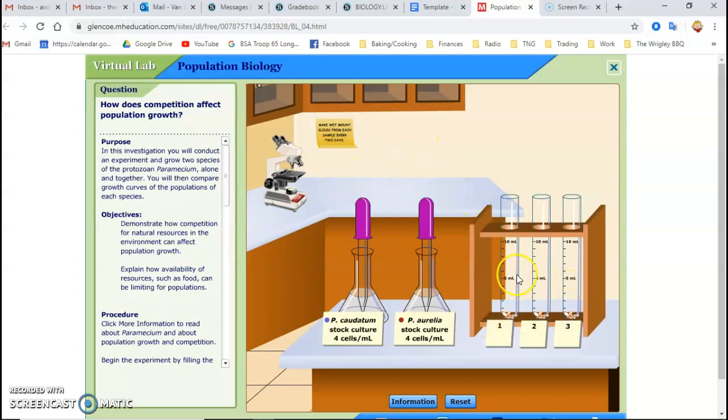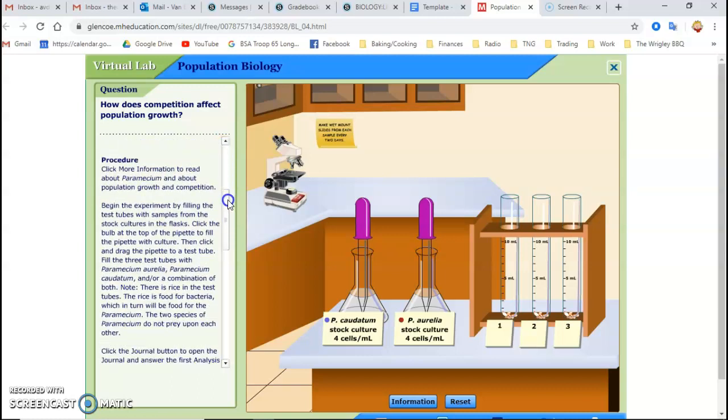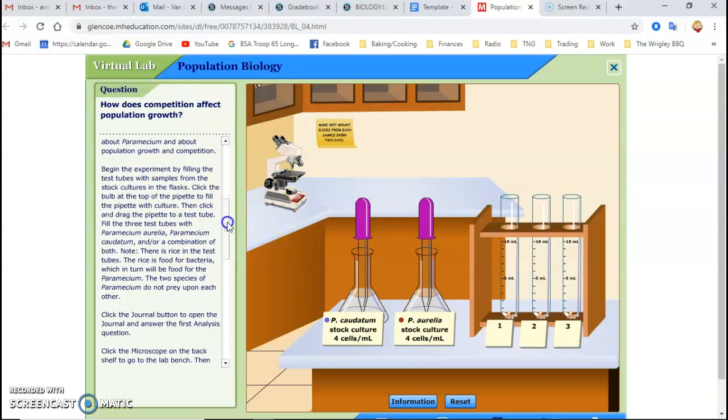And then you are going to count the number of each species of Paramecium that are still alive in each sample over a period of 20 days. All this information is in the procedure here. You can read it, follow the instructions. I'm just going to demonstrate it real quick. I'll do the first couple of days with you.